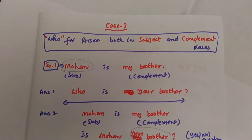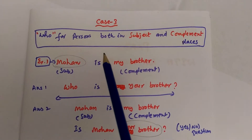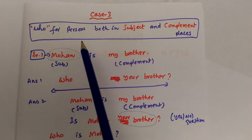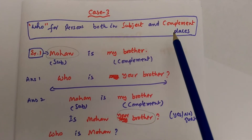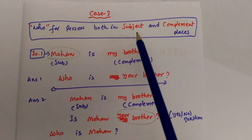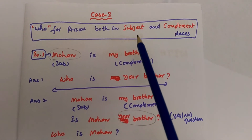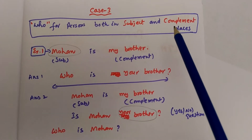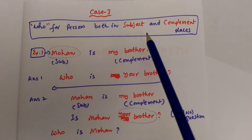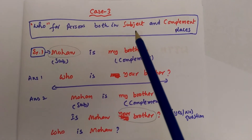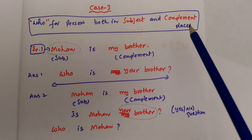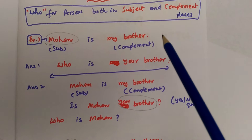Let us see what is case number three. Here, 'who' can be used for persons both in the subject and complement places. Sometimes we come across sentences where we find persons both in the subject and complement places. Then we can have two answers — one for the subject and another for the persons in the complement place.